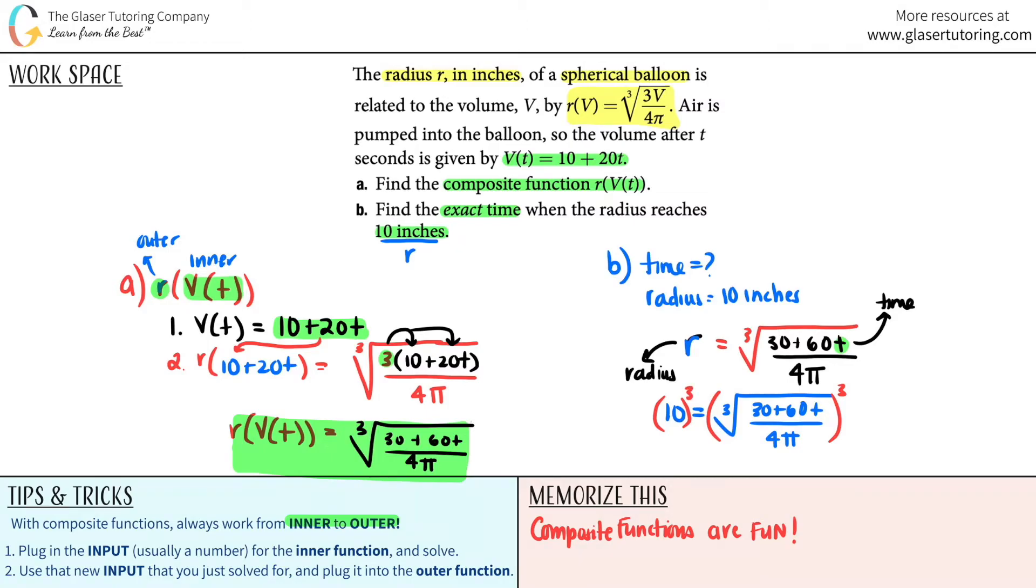So if you cube a cubed root, bye bye. That whole thing goes bye bye. But now we have to just do 10 cubed and 10 cubed is 10 times 10 times 10. So this would now be a thousand equals 30 plus 60t all over 4π.